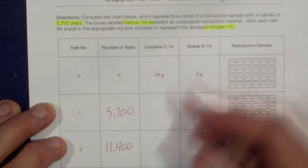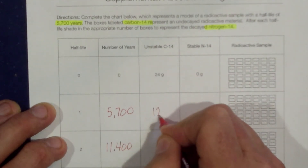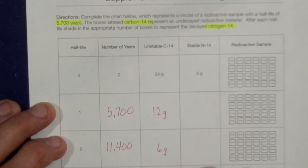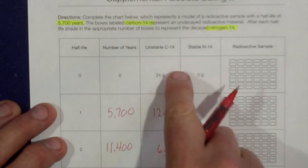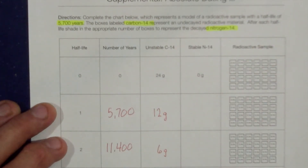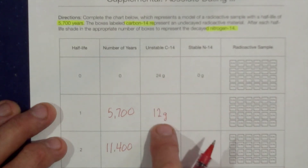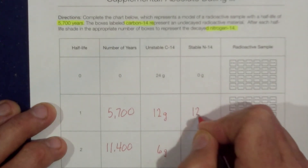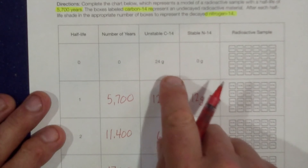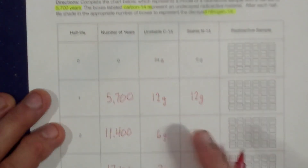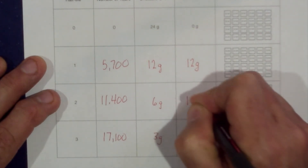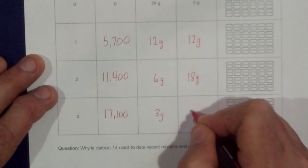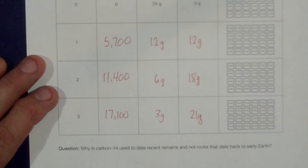If we started off with 24 grams: after one half-life, we would have 12 grams of carbon-14 left; after two half-lives, we would have 6 grams left; after three half-lives, we would have 3 grams left. As the amount of carbon-14 goes down, the amount of nitrogen-14 goes up. If we have 12 grams of carbon-14, we must have 12 grams of nitrogen-14 (12 + 12 = 24). If we're down to 6 grams of carbon-14, 24 − 6 gives us 18 grams of nitrogen-14. If we started with 24 grams and now have 3, we would have 21 grams of nitrogen-14.